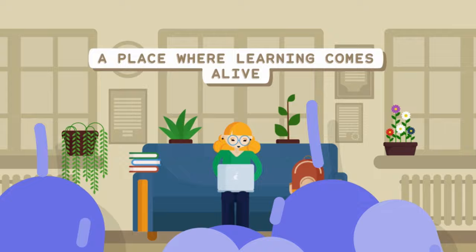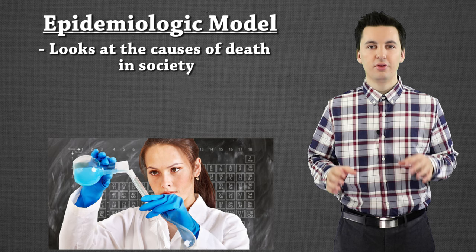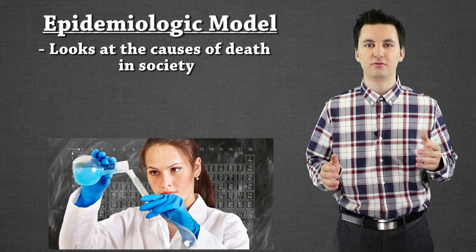Earlier on this channel we talked about the demographic transition model, which was looking at how societies evolved over time. Today though we're talking about the Epidemiologic Transition Model. This model is looking at the demographic model but now we're focusing on the different causes of death, specifically the diseases present in each stage of the demographic transition model.